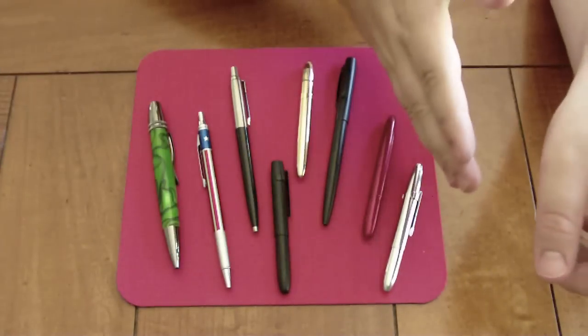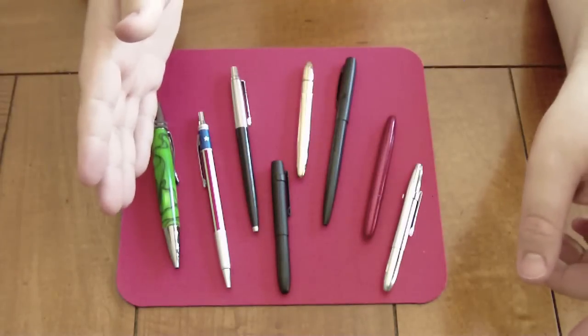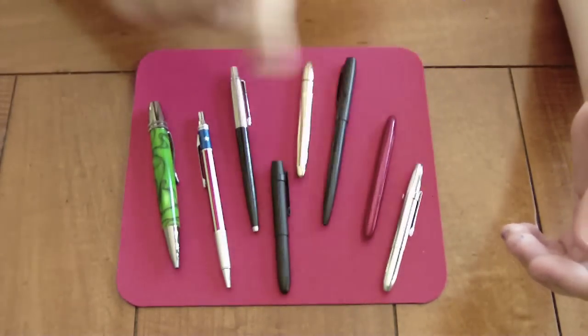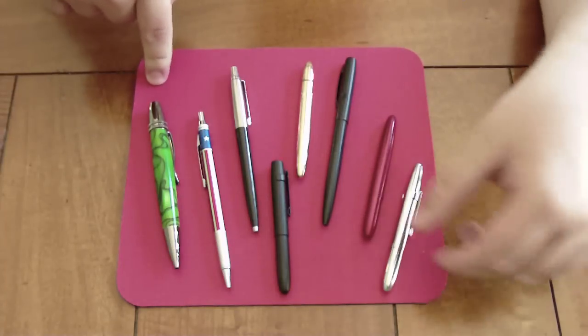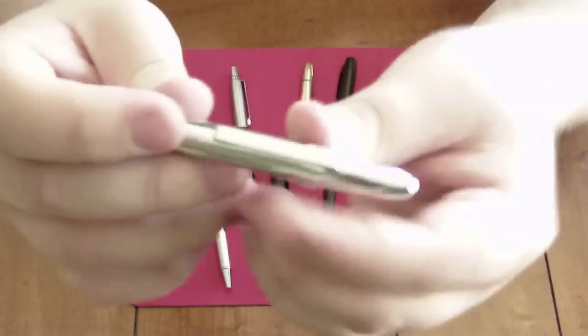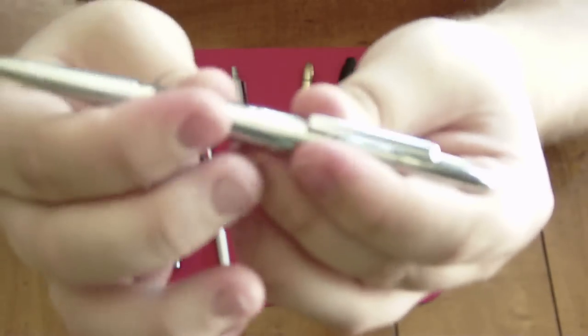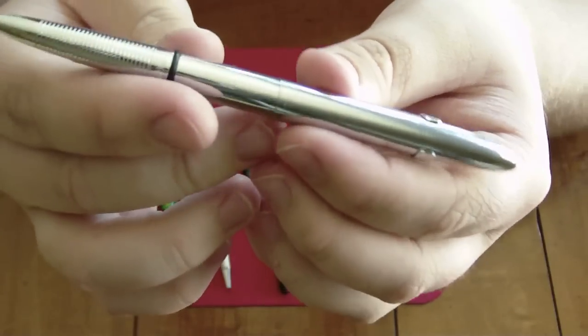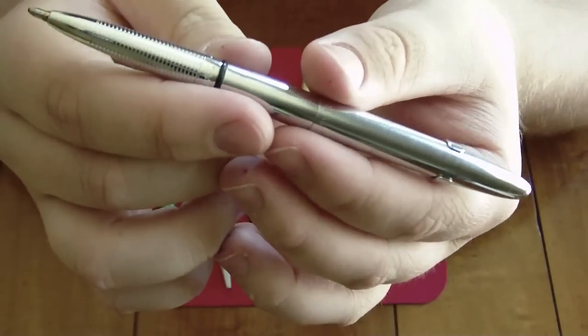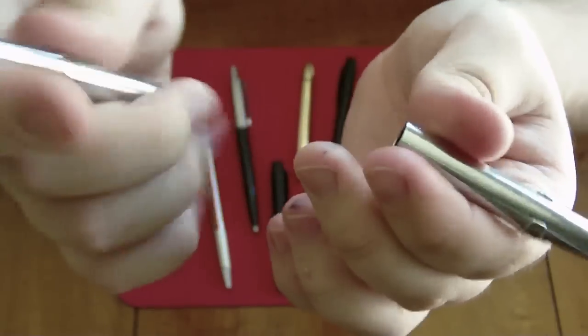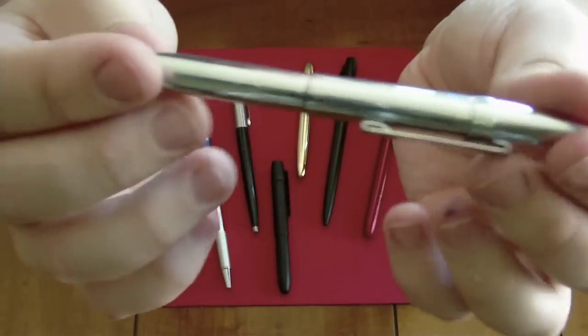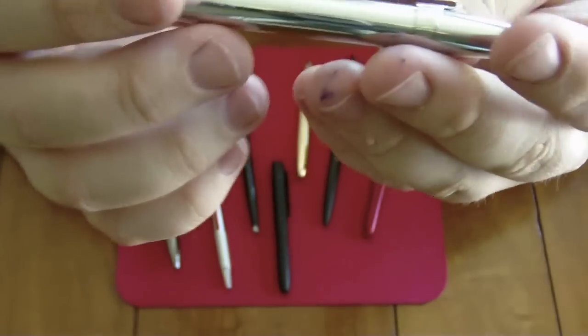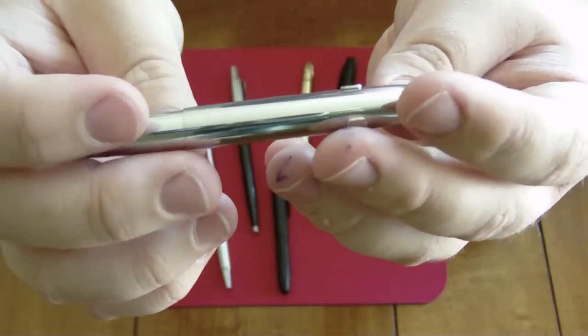So these are chronologically from my left to right set up. Well, chronologically, this is the first one I got. This is the newest one I got just about a couple hours ago. So let's start over here. This is the first pen I got, a Chrome Fisher space pen did not come with a clip. I bought that separately and I got this at Office Depot for about 18 bucks.